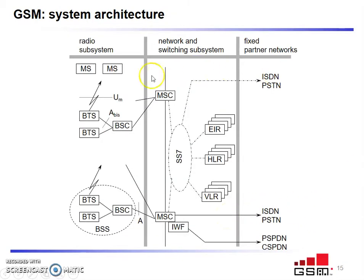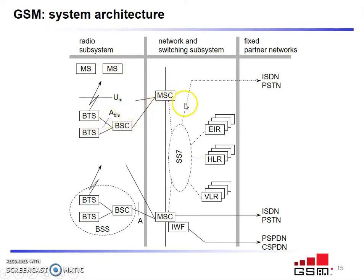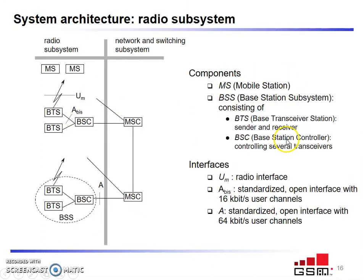Looking into the various subsystems: in the radio subsystem, the BTS communicates with the mobile station, and each BTS communicates through BSC to the MSC present in the network switching subsystem, and finally to the fixed partner networks such as ISDN or PSTN.